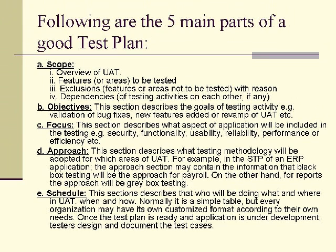A) Scope: This includes an overview of UAT, features or areas to be tested, exclusions — features or areas not to be tested with reasons — and dependencies of testing activities on each other, if any.